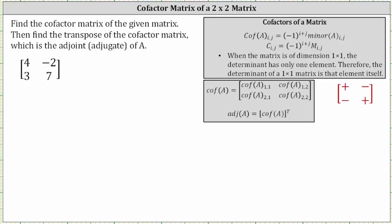We're asked to find the cofactor matrix of the given matrix, and then find the transpose of the cofactor matrix, which is the adjoint or adjugate of matrix A. Because we have a two by two matrix, the cofactor matrix is defined here on the right. Notice how we'll have to find the cofactor for each entry in the two by two matrix. And then the adjoint of A is equal to the transpose of the cofactor matrix. Let's begin by determining the four cofactors needed for the cofactor matrix.